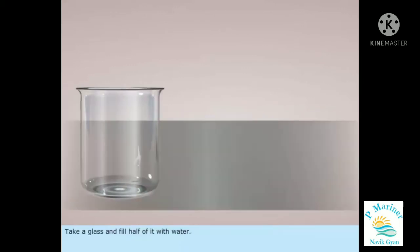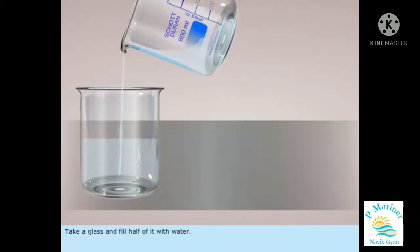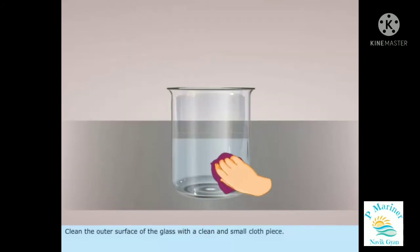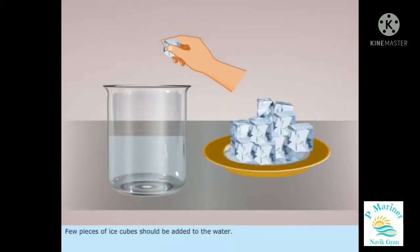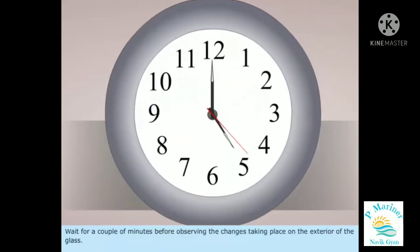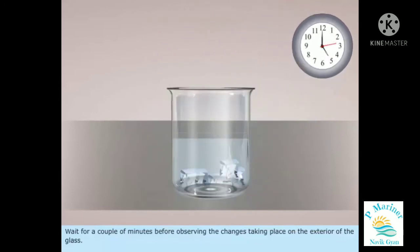Take a glass and fill half of it with water. Clean the outer surface of the glass with a clean and small cloth piece. A few pieces of ice cubes should be added to the water. Wait for a couple of minutes before observing the changes taking place on the exterior of the glass.